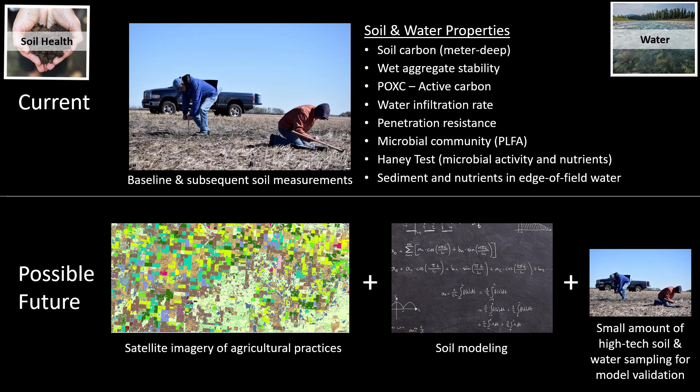In the future, we plan to leverage high-tech tools like satellite imagery, which can detect changes in agricultural practices like cover cropping and no-till on the landscape. And we can use that information to run mathematical models that tell us how the soil and water quality responds. We can validate these modeling results by sampling across a much smaller area than we otherwise would need to.